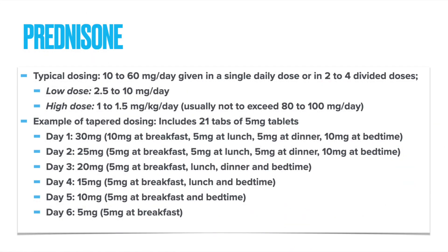Here is an example of typical dosing with oral prednisone. Generally, 10 to 60 milligrams of prednisone are given in a day, either in a single dose or divided into two, three, or even four doses. A low daily dose of prednisone is defined as 2.5 to 10 mgs a day. A high daily dose of prednisone is based on weight and is considered 1 to 1.5 mgs per kg a day, with typically a maximum dosage of 80 to 100 milligrams in a single day.